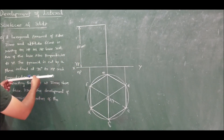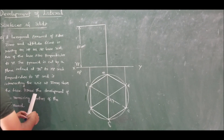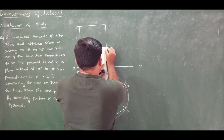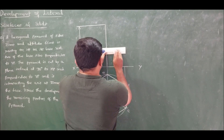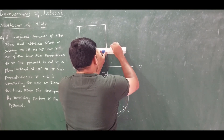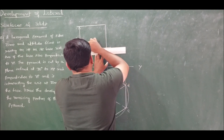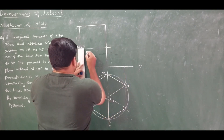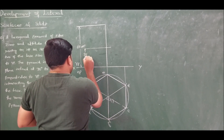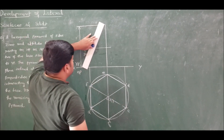The cutting plane is inclined at 30 degrees to HP and passes through the axis at a distance of 30 mm above the base. Mark 30 mm above the base on the axis and show the cutting plane making an angle of 30 degrees to HP. Show the dimension as 30 mm from the base. Now connect the slanted edges.